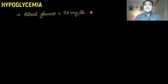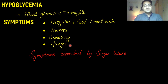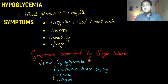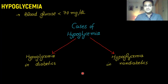Hypoglycemia is defined as blood glucose level less than 70 milligrams per deciliter, or symptoms of hypoglycemia such as irregular fast heart rate, tremors, sweating, hunger, and palpitations. These symptoms are caused by the sympathetic system in an effort to increase blood glucose levels and are corrected by sugar intake. Severe hypoglycemia can cause hypoxic brain injury, coma, and even death — it kills patients very rapidly if not corrected in time.